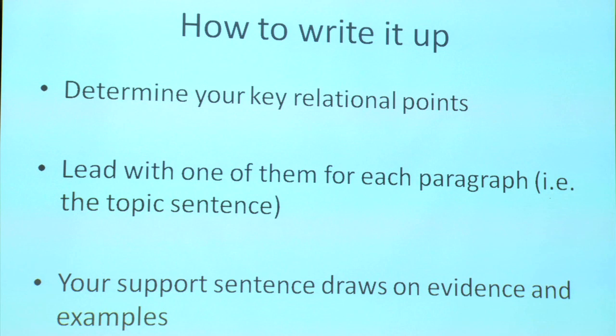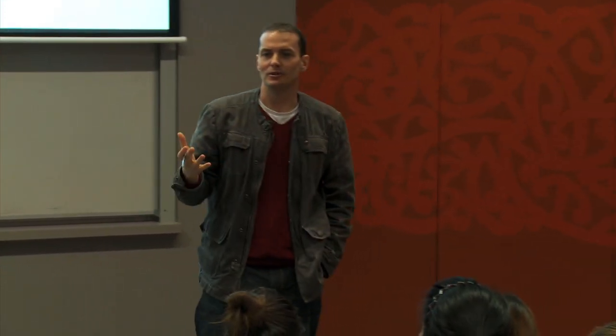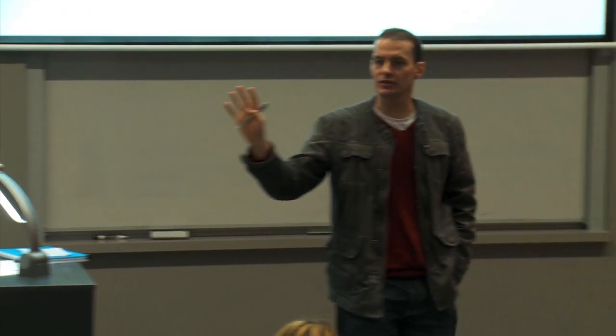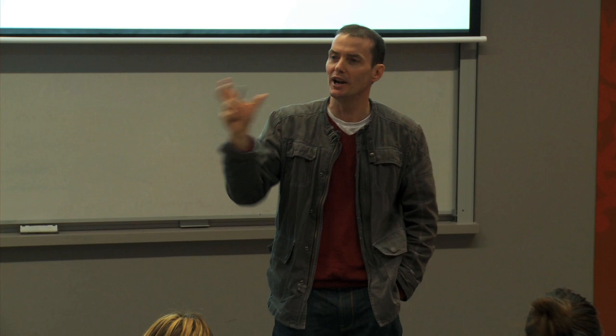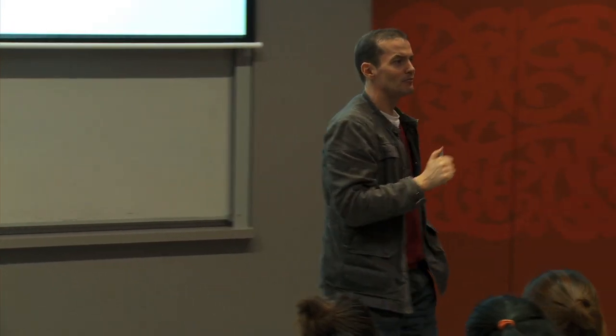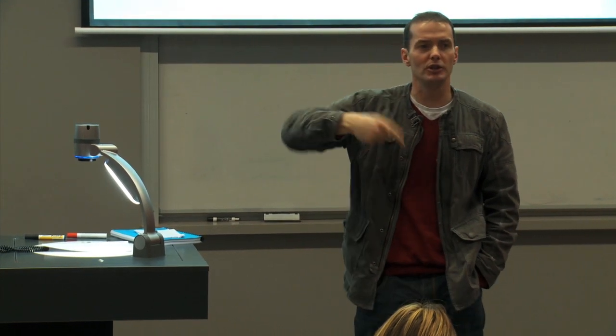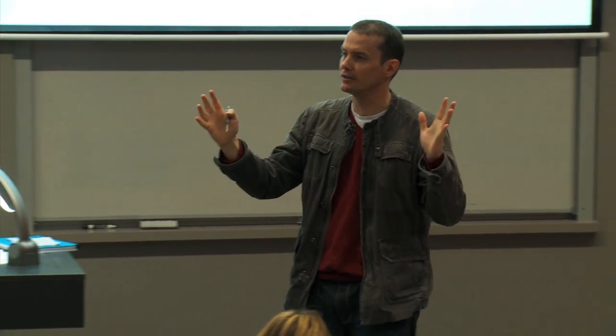First of all, just determine your key relational points. Some of the relational points we picked up here was that there are different arguments that legitimise what property is — that's a key relational point. Lead with that in your paragraph and use it as your topic sentence. The topic sentence is normally your first sentence in the paragraph; that's your main idea, your winning idea, your key point. And then the rest of the paragraph supports that topic sentence. Determine what that topic sentence is going to be by doing your relational analysis beforehand, so that you lead off with a nice strong statement that clearly states to the marker what your position is.